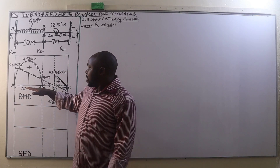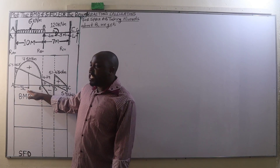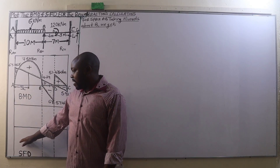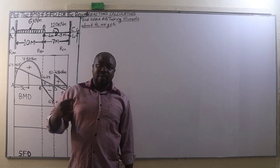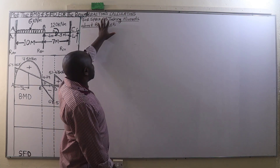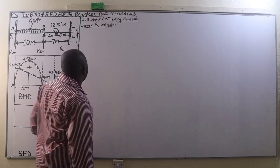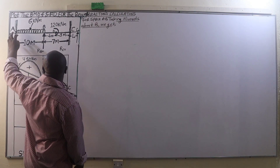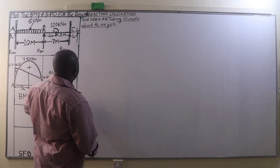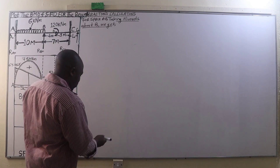After plotting the BMD, the next thing will be plotting the SFD, but we must calculate the reactions first. In this case, we are going to begin with the span AB, taking moments about B.